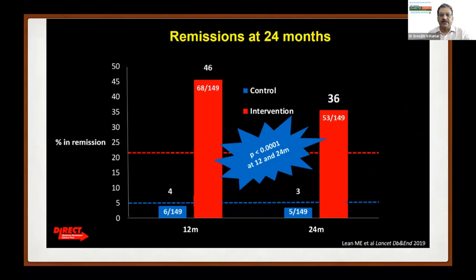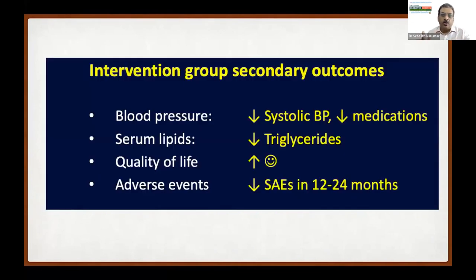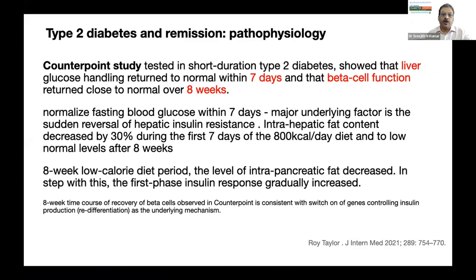Two years later, in 2019, follow-up results were published. Originally 46% had gone into remission at one year; at the end of two years, 36% of patients still continued to be in remission. They concluded that type 2 diabetes is reversible and is not a lifelong illness. Even in those who did not achieve remission, a 50% reduction in diabetes medication was achieved. One third of patients with early type 2 diabetes — those with less than six years of diabetes — underwent remission, and if they had lost more than 10 kilograms, it was 64%. Not only did blood glucose normalize, but blood pressure and serum lipids came down and quality of life improved.